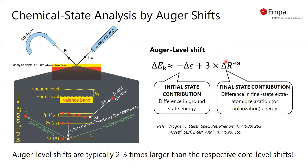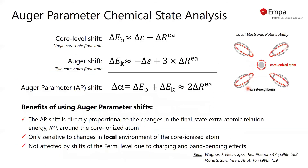arises due to the fact that we end up with a two-core-hole final state, and thereby the screening effect of the valence electrons is much larger. As shown by Wagner in the 1970s,